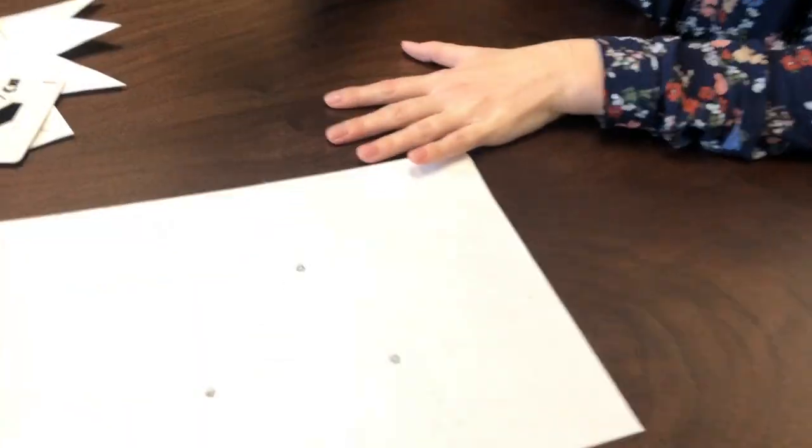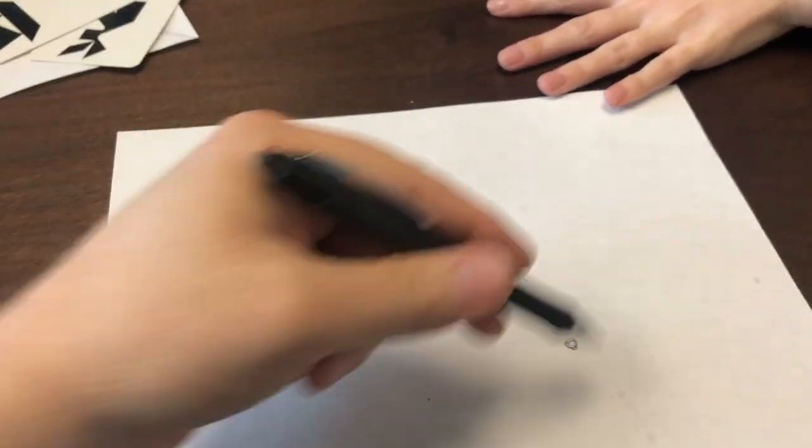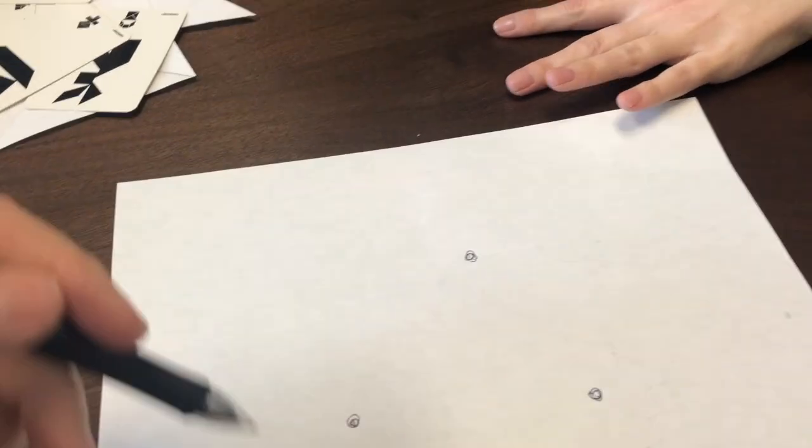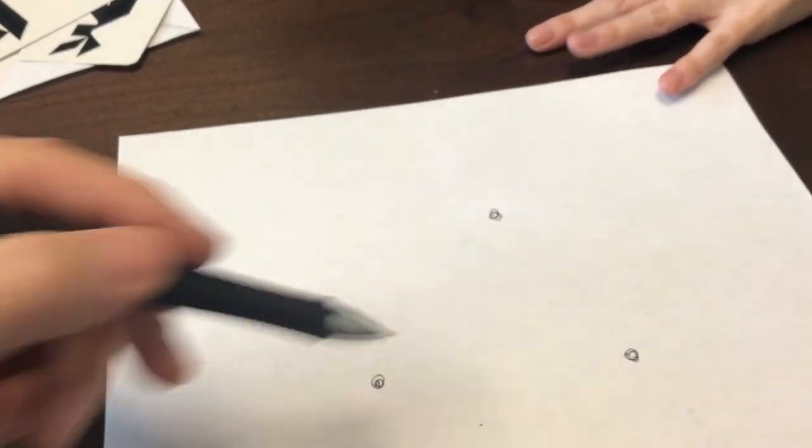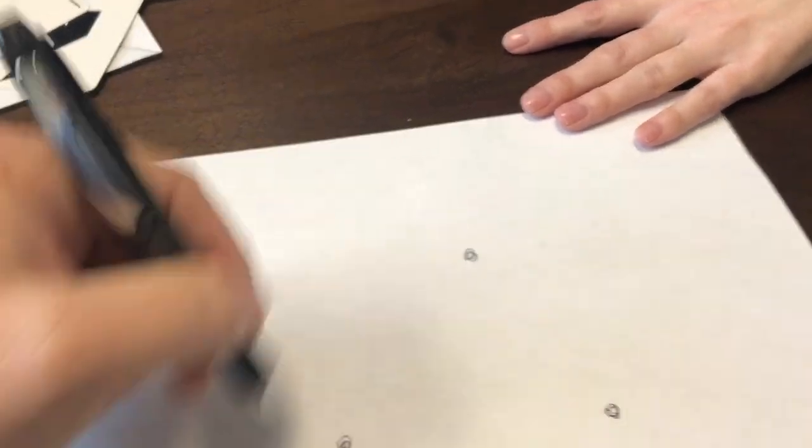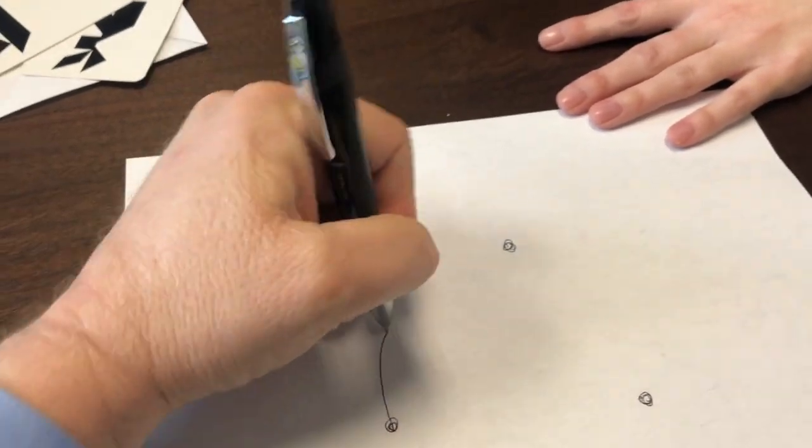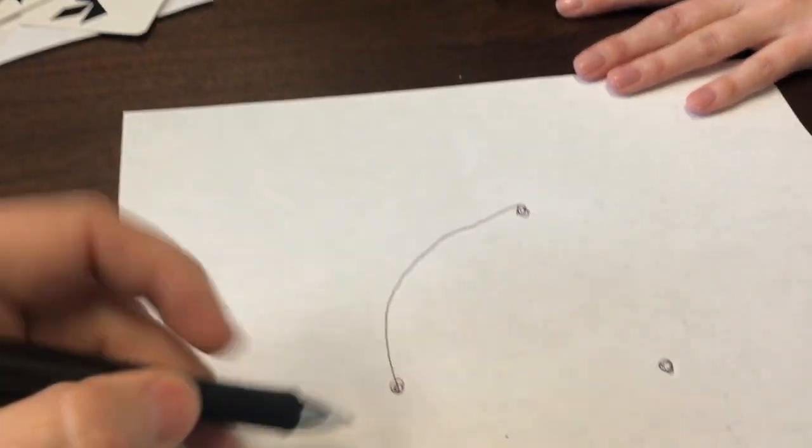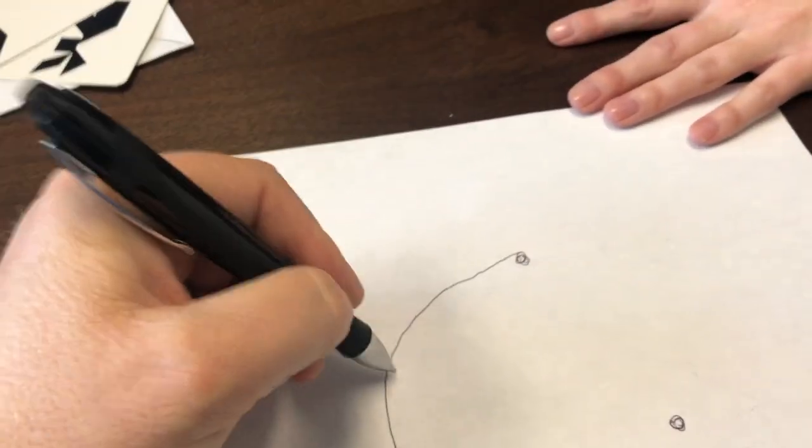There's my three dots. Then we take turns going back and forth connecting two dots with any sort of curvy line or straight line, it doesn't matter. The idea is, once I have connected - I'll go first and I'll connect these two - then once I've connected two points, I put a dot anywhere on that brand new line, creating a brand new point.